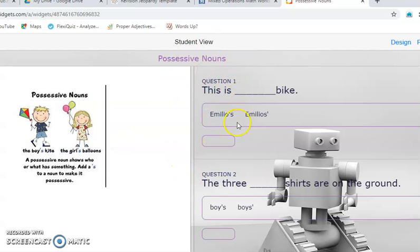This is your worksheet. So I have here a little example of what possessive nouns are: the boy's kite, the girl's balloon. A possessive noun shows who or what has something. Add an apostrophe S to the noun to make it possessive. This is just one example. We know the rules for possessive nouns.